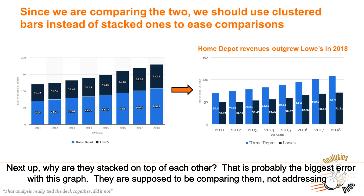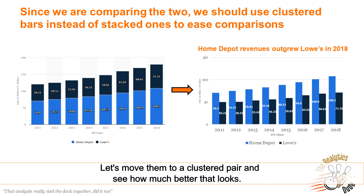Next up — why are they stacked on top of each other? This is probably the biggest error with this graph. This is supposed to be comparing them, not addressing the total home improvement market size. Let's move them to a clustered pair and see how much better that looks.